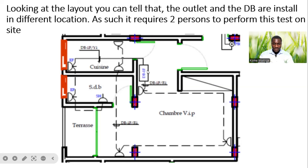I'll give an example whereby we want to test from the DB side. We have our wires that have been installed, and then we are testing from either this socket outlet. So we have our wire leaving from the DB, getting to the socket outlet, and then moving to this other socket outlet. It loops and then it ends at this point.